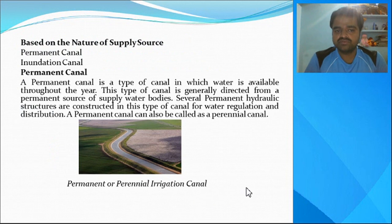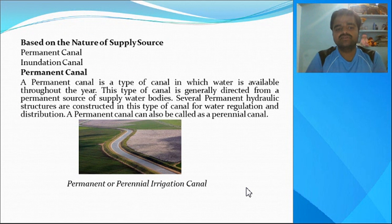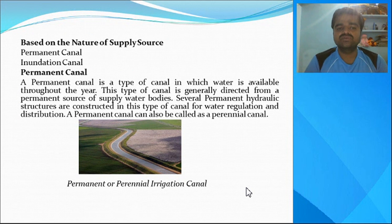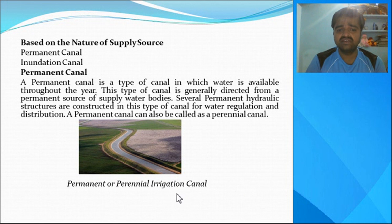Based on the nature of the supply source, canals are classified into two types: permanent canal and inundation canal. A permanent canal is a type of canal in which water is available throughout the year. This type of canal is generally fed from a permanent source of water supply, and several permanent hydraulic structures are constructed for water regulation.